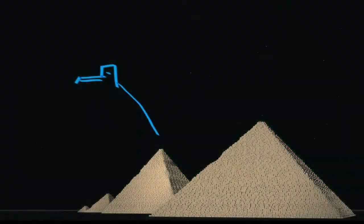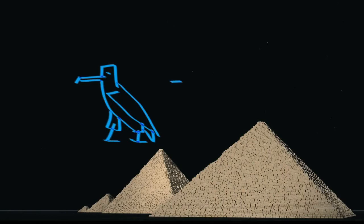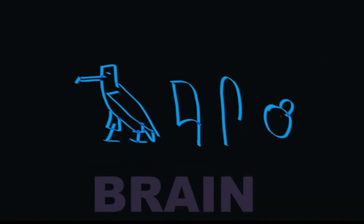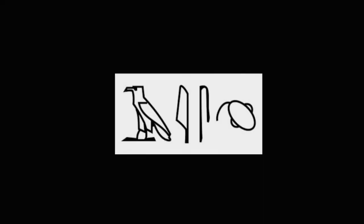The word brain was written like this. The hieroglyphic for the word brain occurred eight times in the Edwin Smith's Surgical Papyrus.